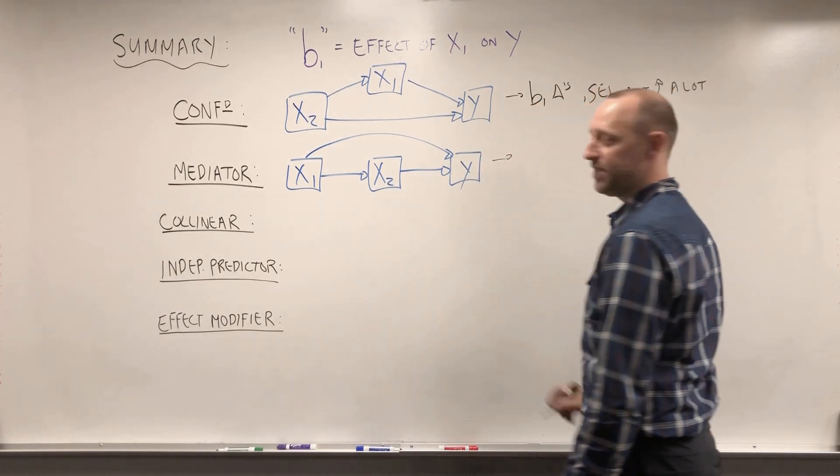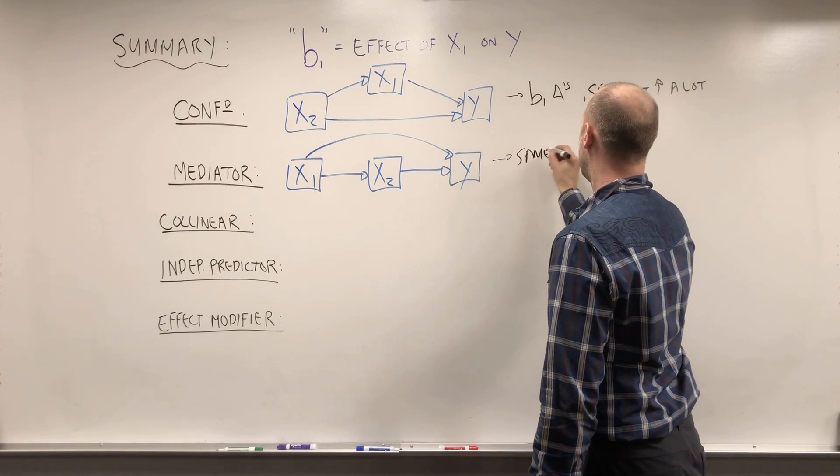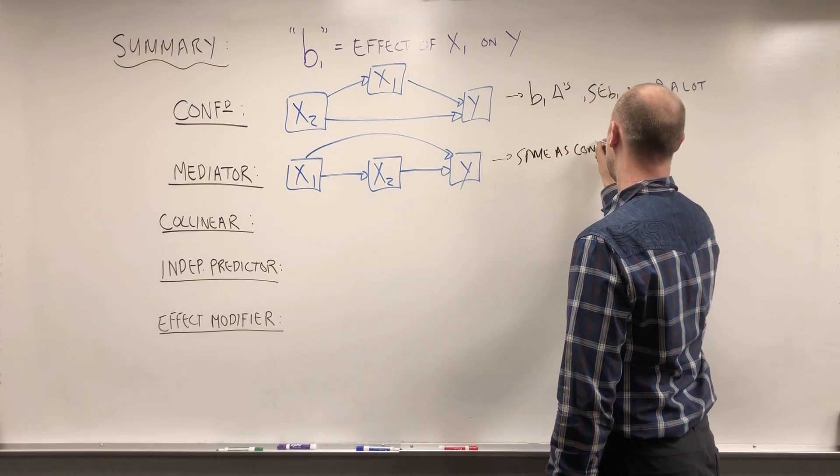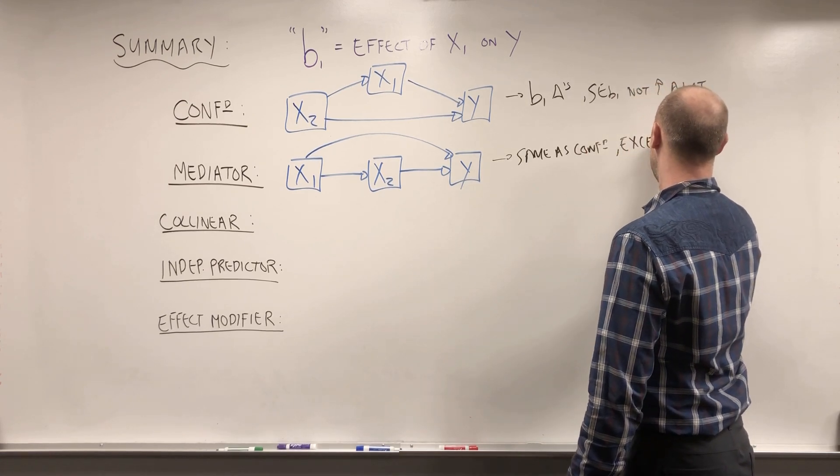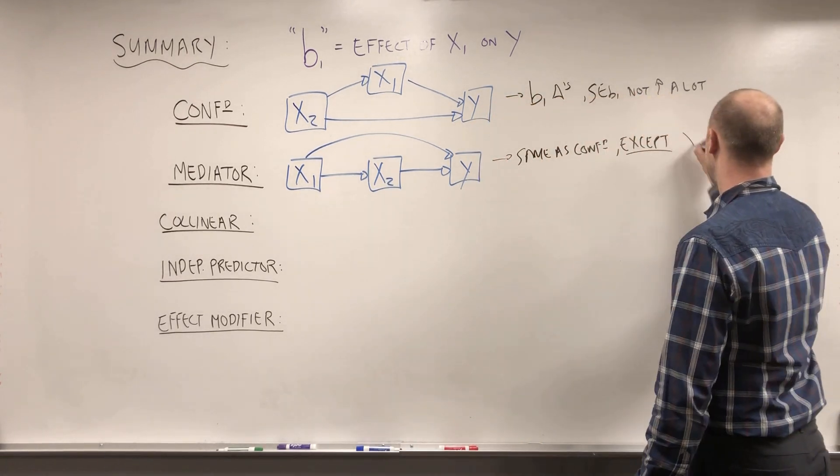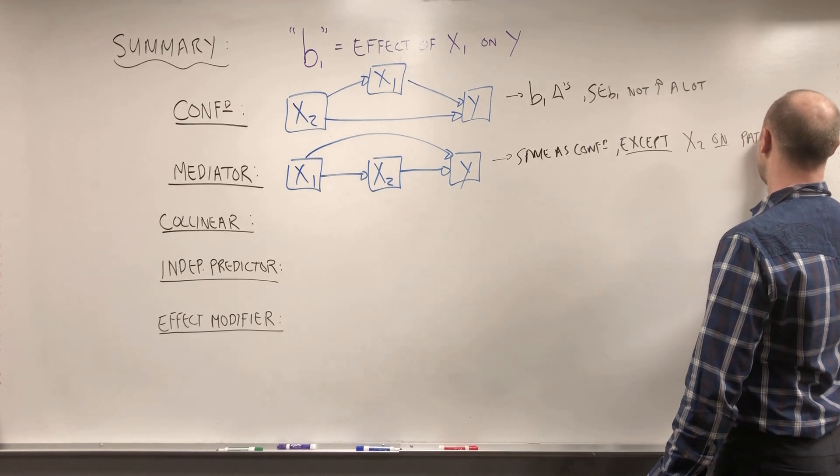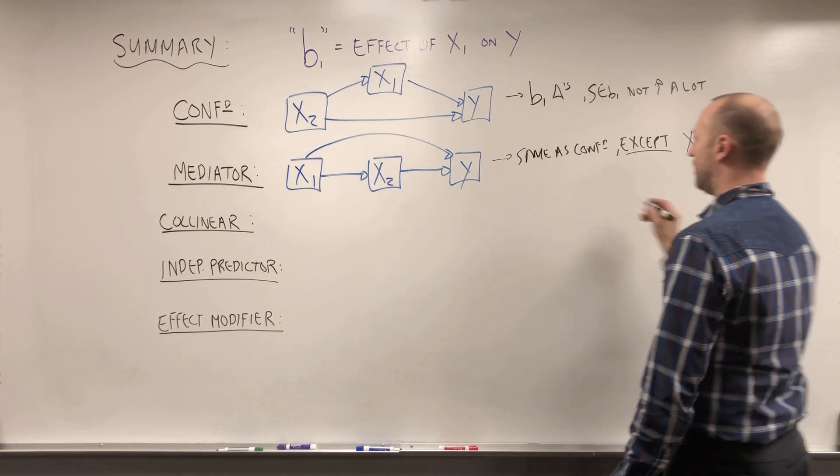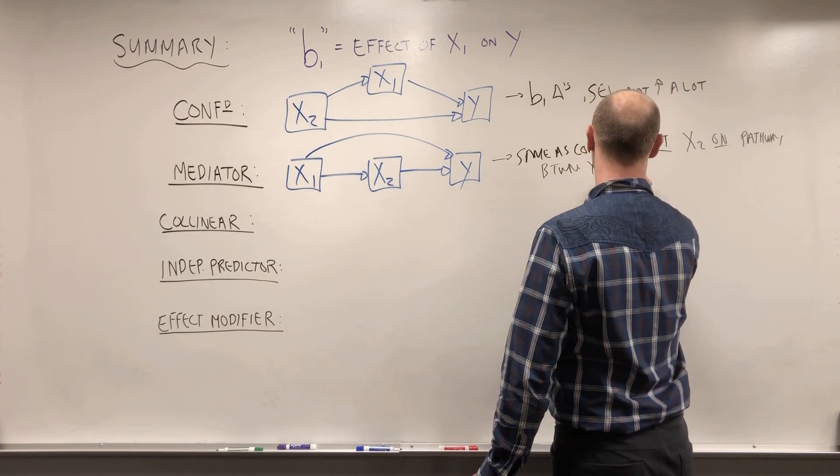And the way that these behave we said numerically is the same as confounding except the only difference is our understanding of the relationship between X1 and X2. That X2 is on the pathway between X1 and Y.